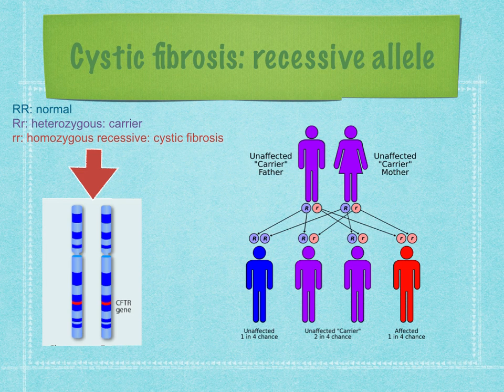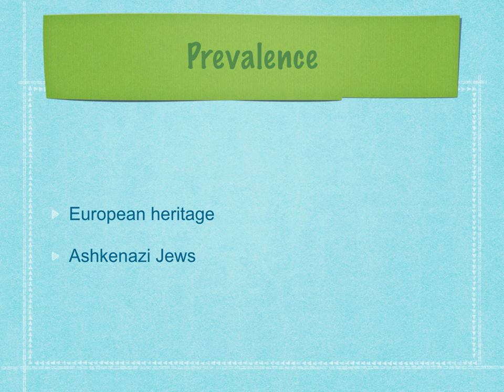If two carrier parents have children, it's possible that one child will have genotype lowercase r, lowercase r and therefore have cystic fibrosis. Where there's a history of the disease in both families, parents may choose to be genetically screened. Cystic fibrosis is found mostly in people of European heritage and Ashkenazi Jews, possibly because of a heterozygous advantage against cholera and typhoid — as those diseases require the functional CFTR protein, a carrier would likely have survived them.